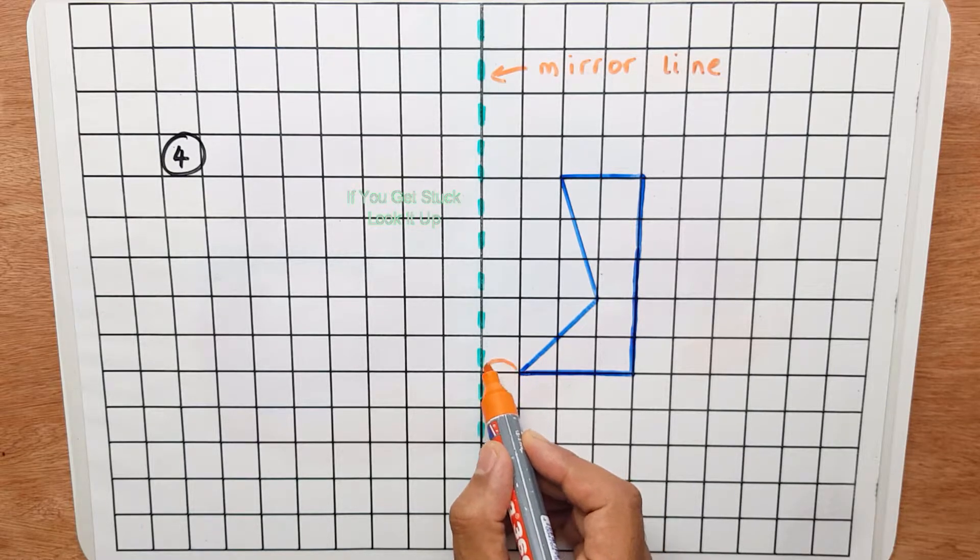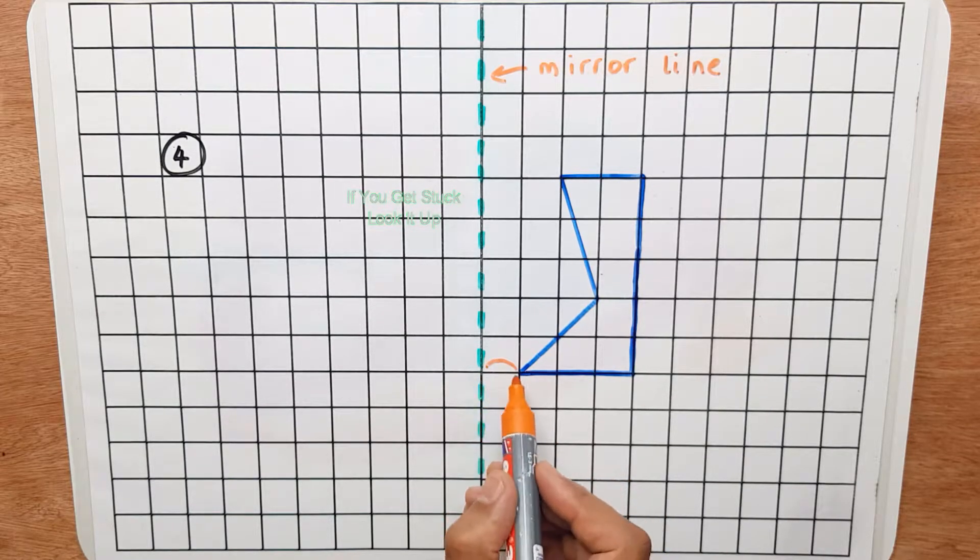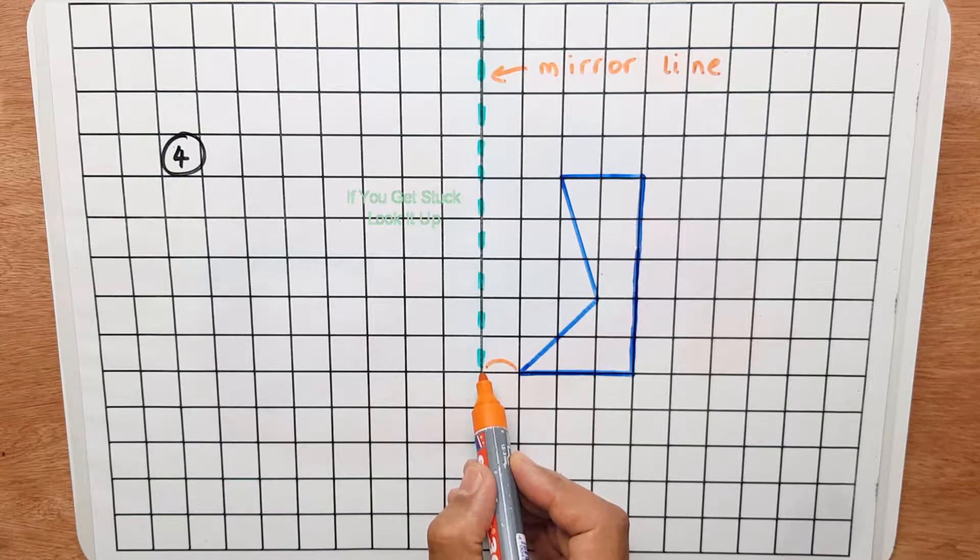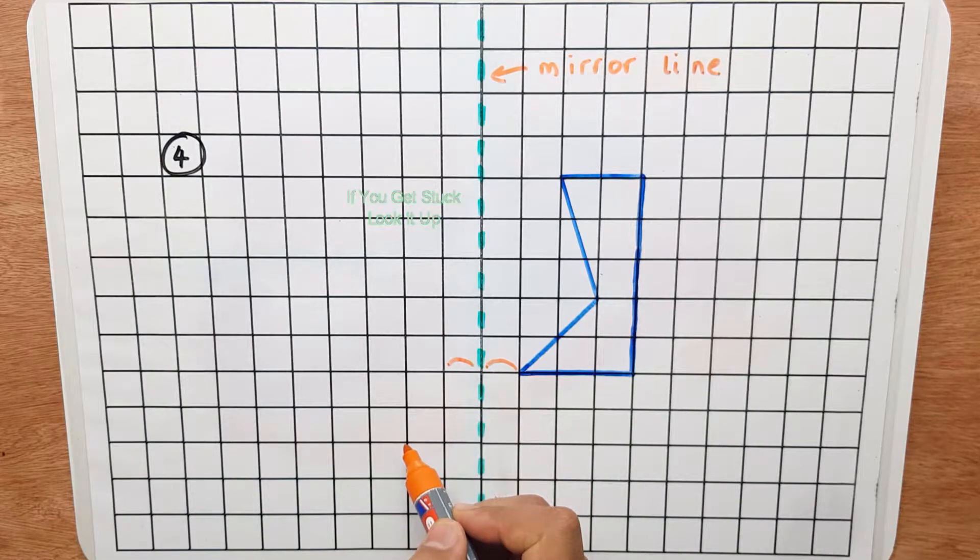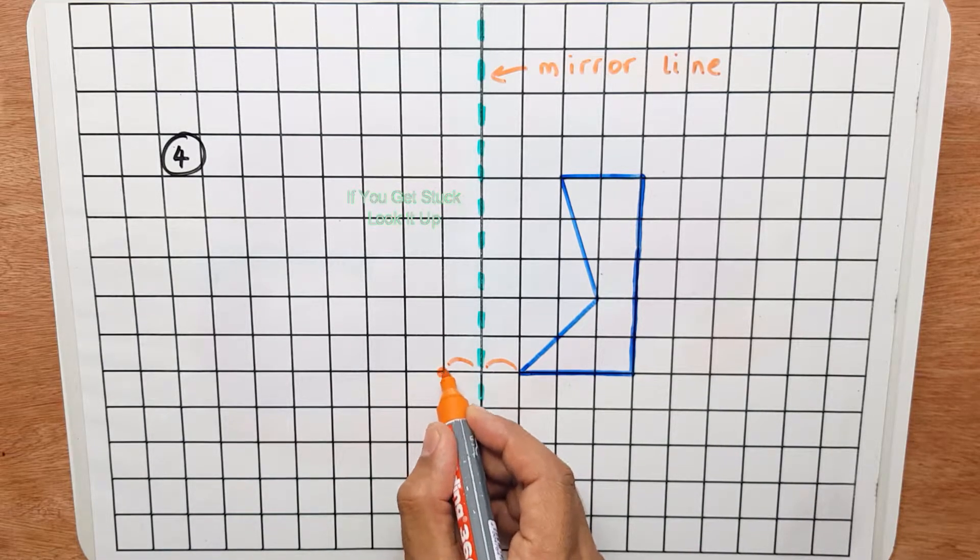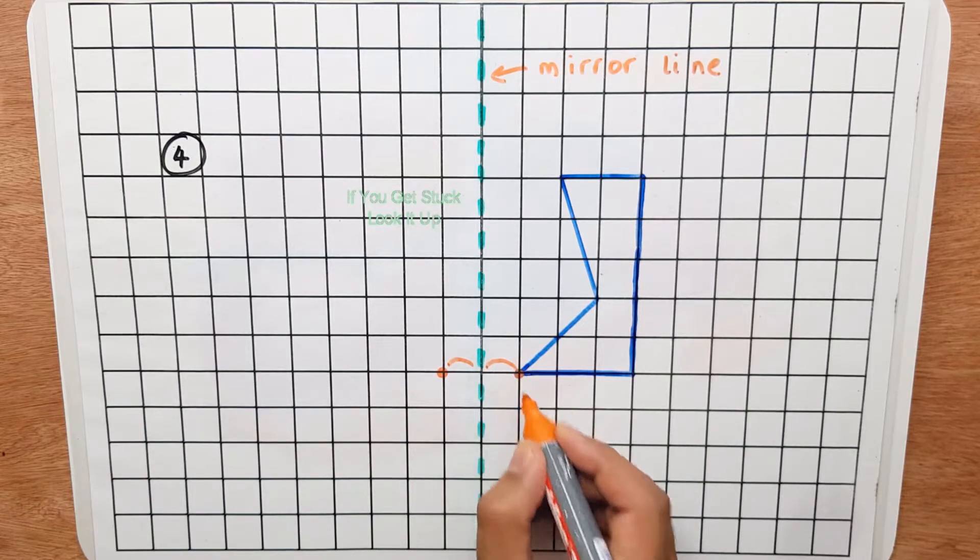So if I look, one. Now what you do is if you've jumped one square to the mirror line, you have to jump one square back out. So I have to jump one more square there. So this point and this point are the same.